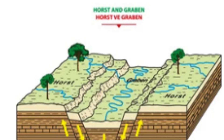The formation of Horsts and Grabens in rift valleys is a result of tensional forces within the earth's crust. As tectonic plates move apart, the pressure on the underlying rocks is reduced, allowing them to expand and stretch. This stretching leads to the formation of normal faults, which are faults that result from the movement of rocks in opposite directions.